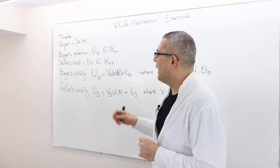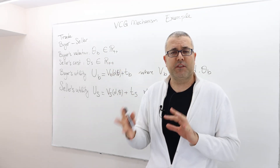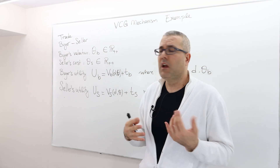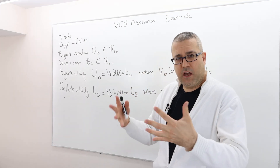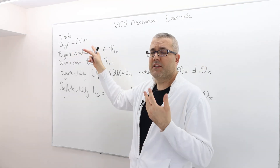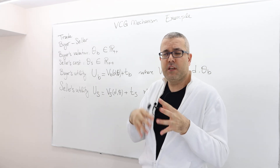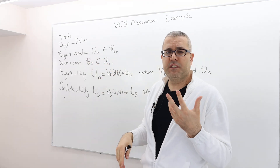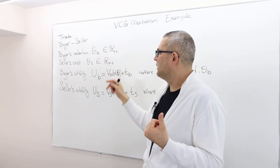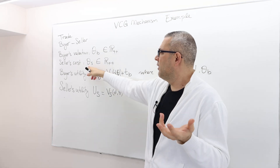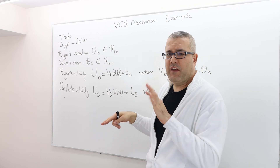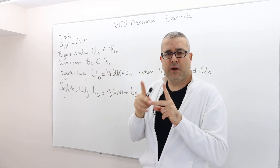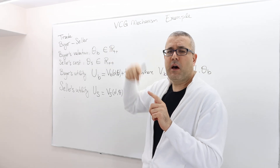In this simple trade environment, a buyer and a seller make a trade. They have private information about their valuations, so the question is what should be the optimal price. There is a single buyer and a single seller. The buyer values the object — his valuation is denoted by θB, any positive real number — and the seller's cost is denoted by θS, also any positive real number. The buyer knows his own valuation and the seller knows his own cost, but they don't know each other's valuations.